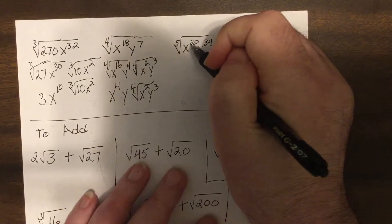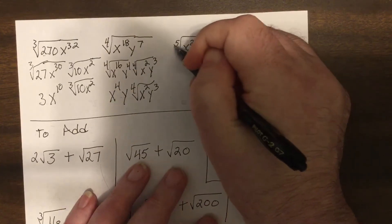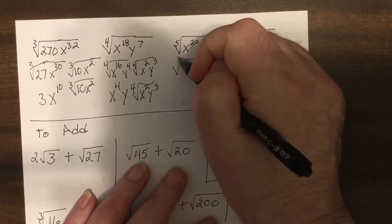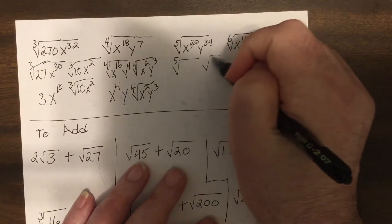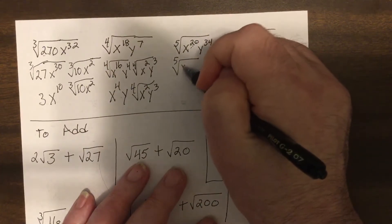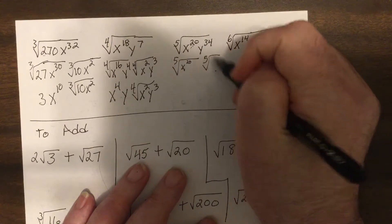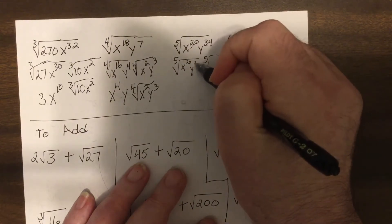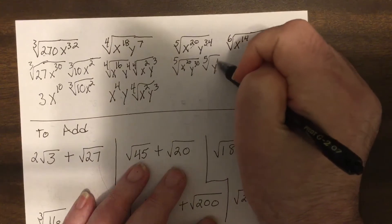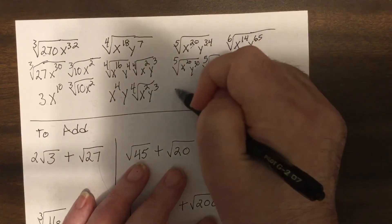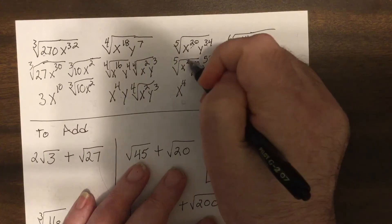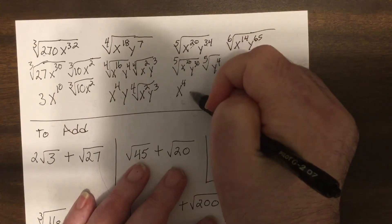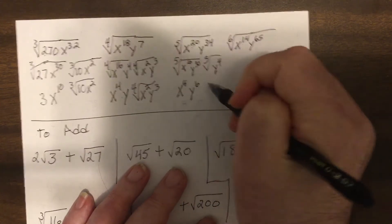So this one, this is a perfect fifth power because it's divisible by five. So I break it up the fifth root, x to the 20th, nothing left over. This one, 30 is divisible by five. So it'd be y to the 30th and then y to the fourth left over. So this would be x to the fourth, divide 20 by five, divide 30 by five. You'd have y to the sixth.